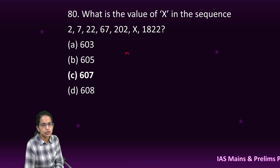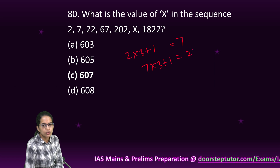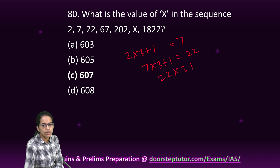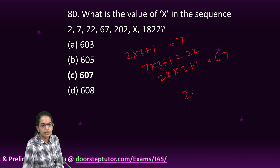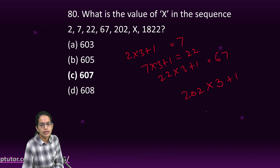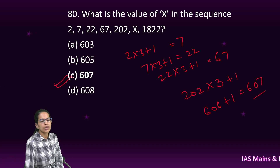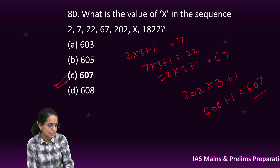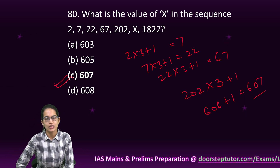The last question: find the value of x in the sequence. The pattern is multiply by 3 and add 1: 2 × 3 + 1 = 7, 7 × 3 + 1 = 22, 22 × 3 + 1 = 67, then 67 × 3 + 1 = 202, and 202 × 3 + 1 = 607. So 607 is the right answer.